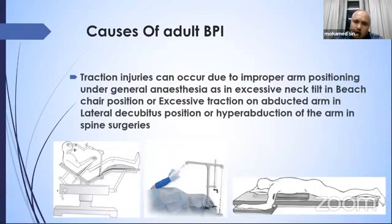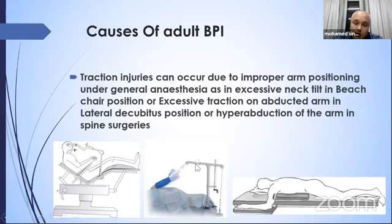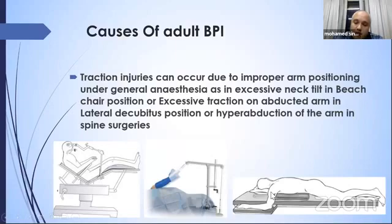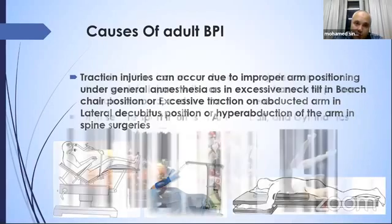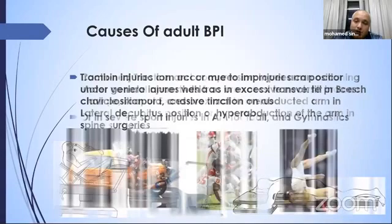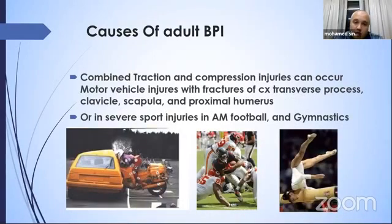Traction injuries can also occur due to improper arm position under general anesthesia — such as excessive neck tilt in beach-chair position used in shoulder arthroscopy, or excessive traction in lateral decubitus position, usually not exceeding 10 pounds. Spine surgeries requiring hyperabduction of the arm for a long time can also cause injury. Combined traction and compression injuries can occur in motor vehicle accidents with fracture of the cervical transverse process, clavicular fracture, scapular fracture, and proximal humeral fractures.